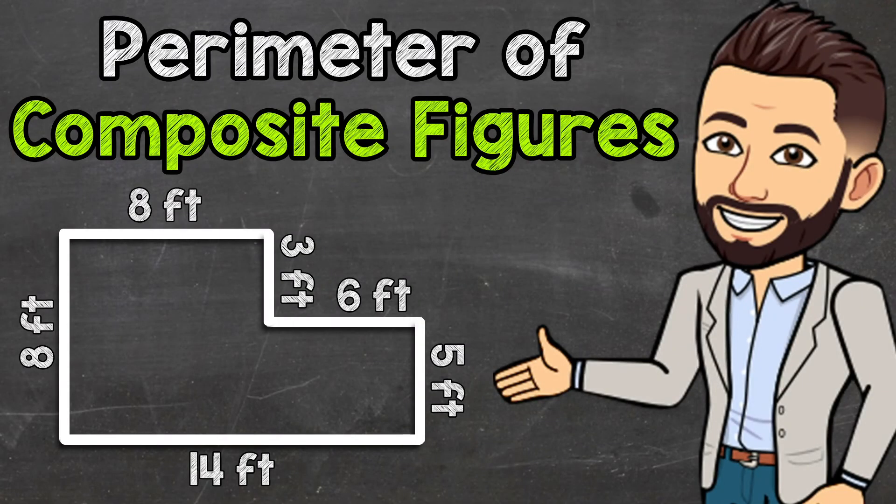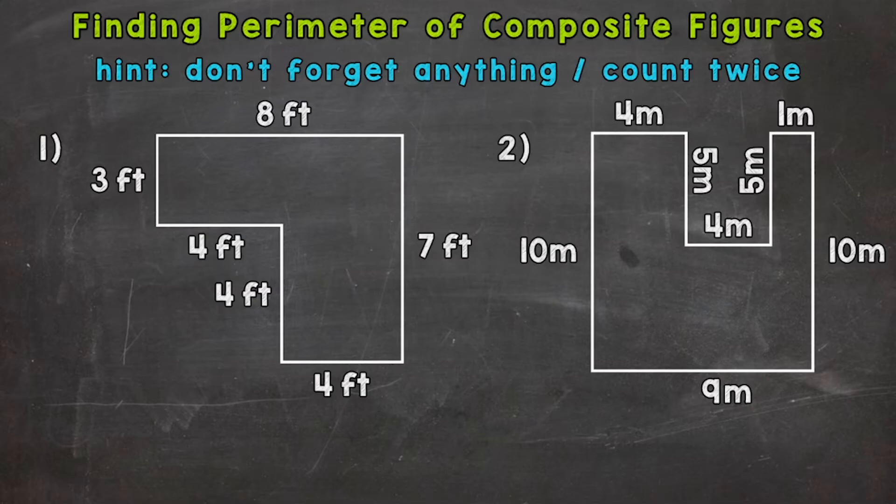Welcome to Math with Mr. J. In this video, I'm going to cover how to find the perimeter of a composite figure. Remember, perimeter is the distance around a two-dimensional figure, and two-dimensional means flat. We have two examples that we're going to go through together.